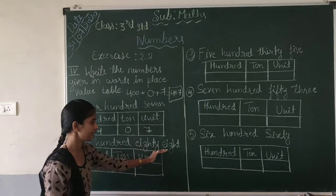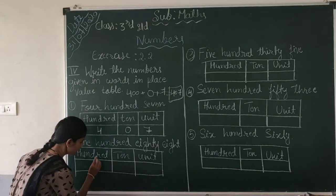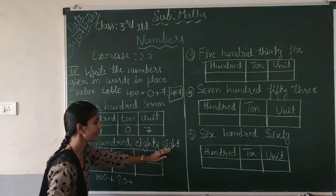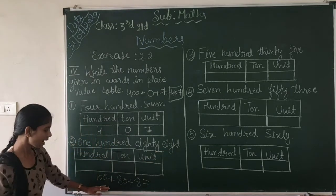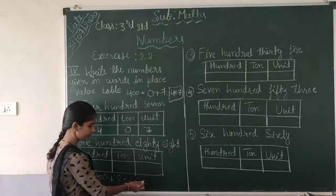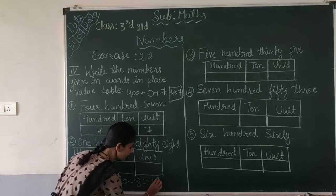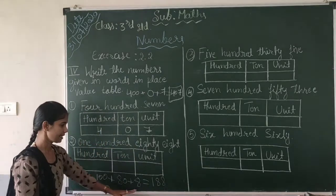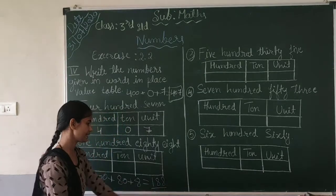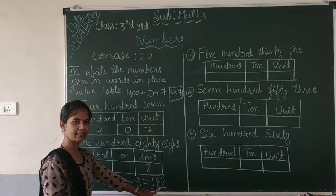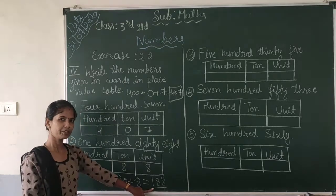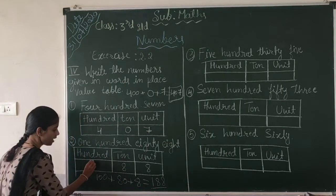Second one: one hundred eighty. One hundred plus eighty plus zero units. That is 100 plus 80 plus 0. Total is 180. Eight is in which place? It is the tens place. Wait — one hundred and eighty: 0 is in the units place, 8 is in the tens place, and 1 is in the hundreds place.